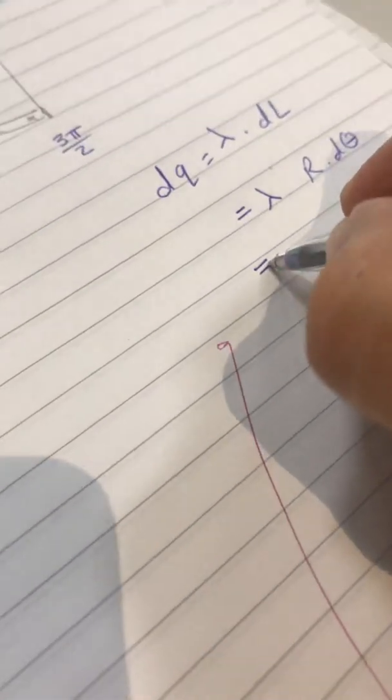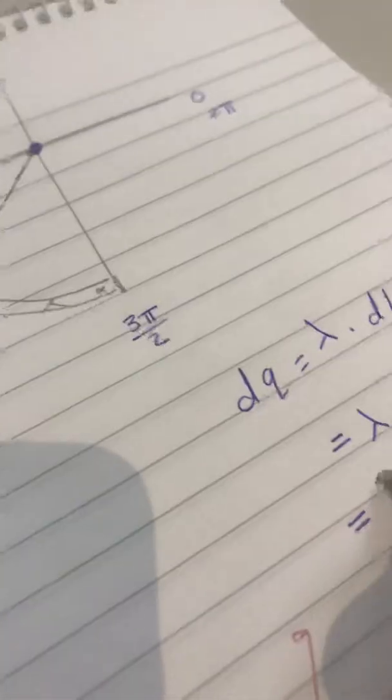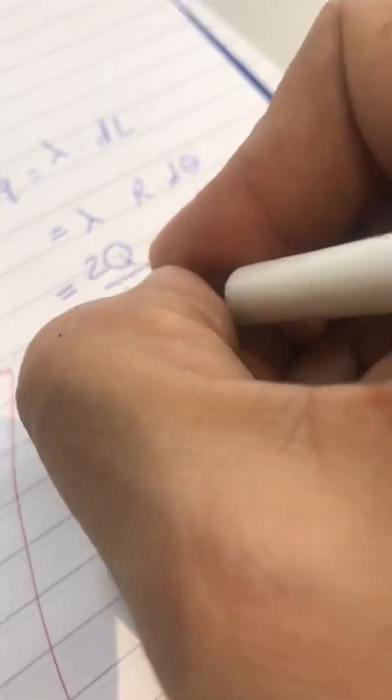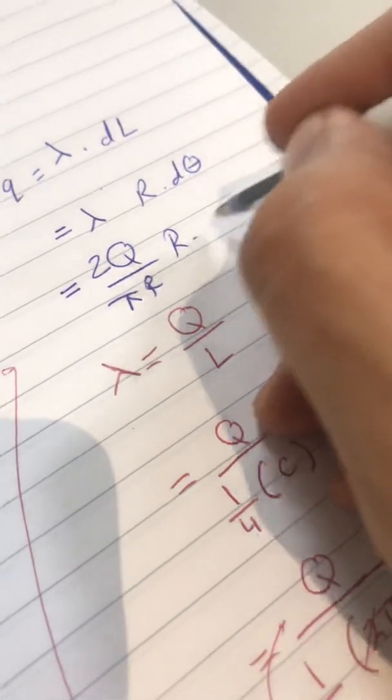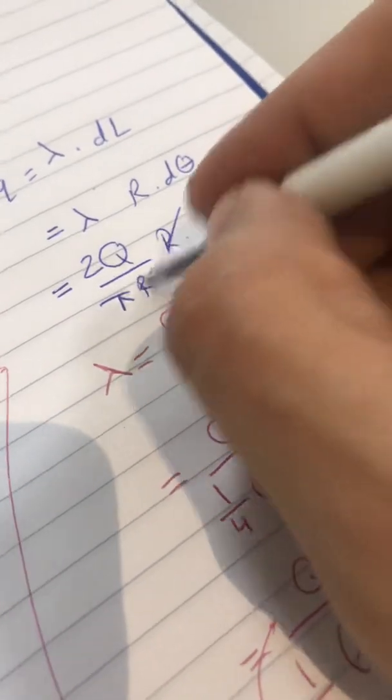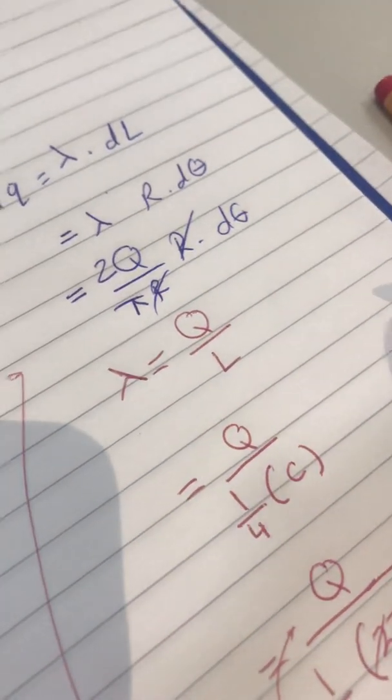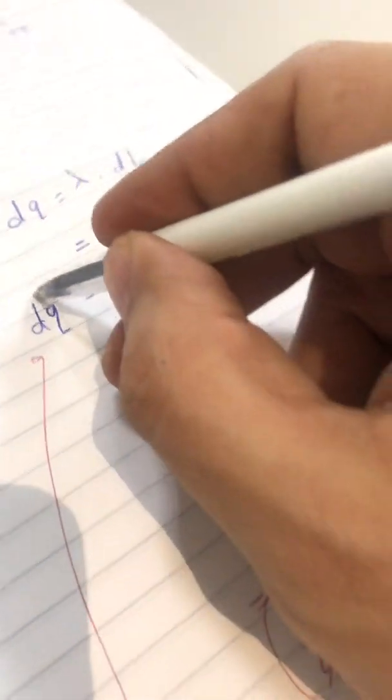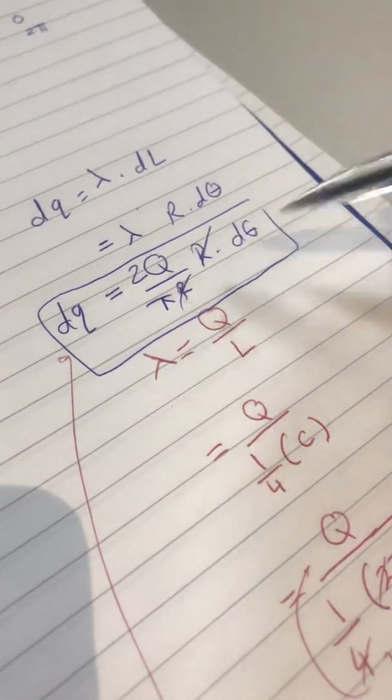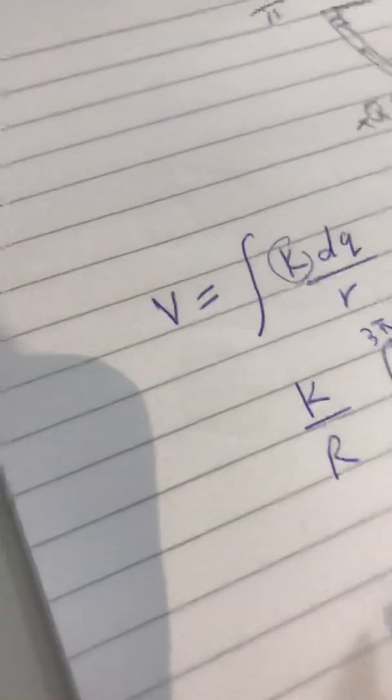So, it will be 2 Q over Pi R, this is Lambda, times R dot D Theta. R with R cancel each other. So, this is DQ: 2 Q D Theta over Pi. Here, let's go again, K over R integration.